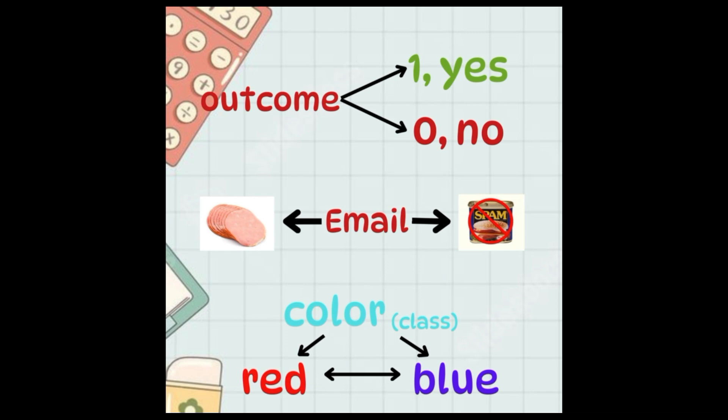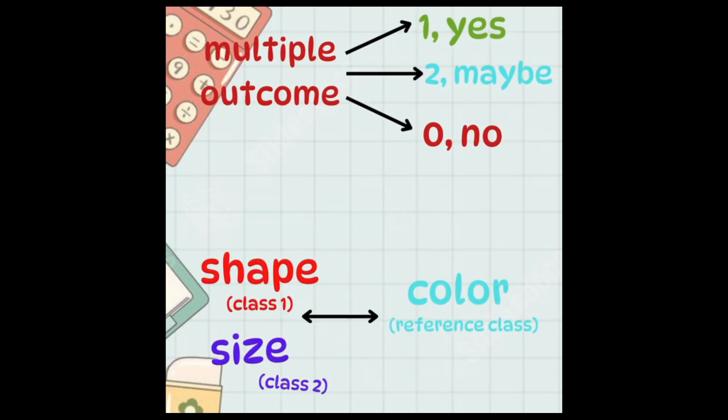In binary logistic regression we model the probability of one class relative to the other class, but multinomial logistic regression extends binary logistic regression to handle multiple outcome categories.